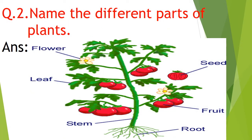Question number two: name the different parts of plants. You have to see the picture and say the answer. The different parts of plants are roots, stem, fruits, flower, and leaf.